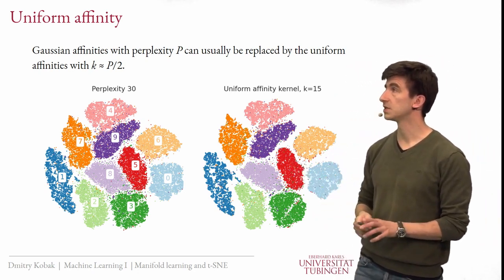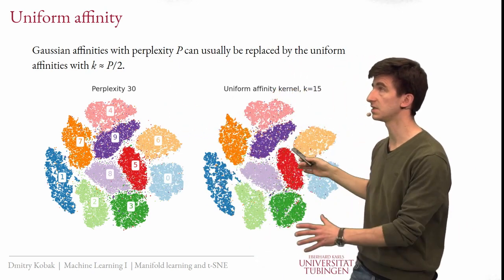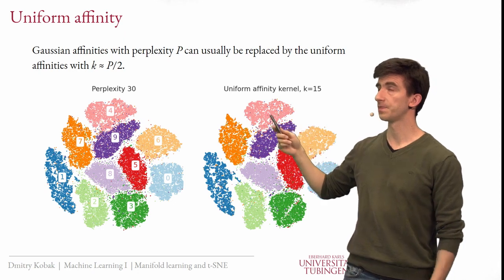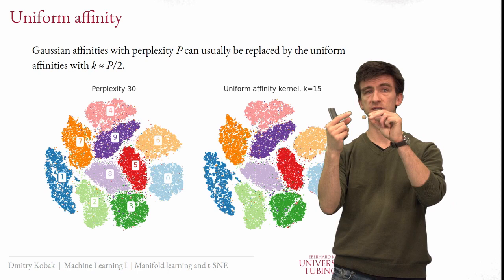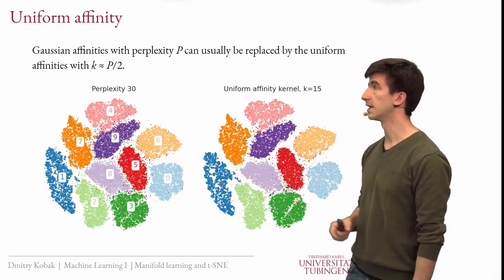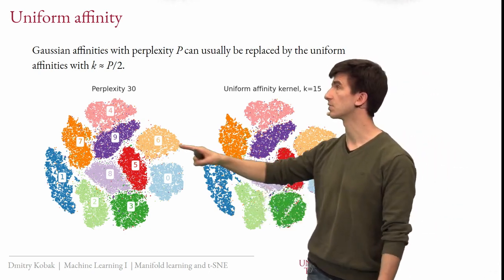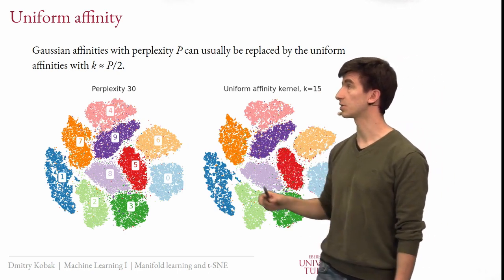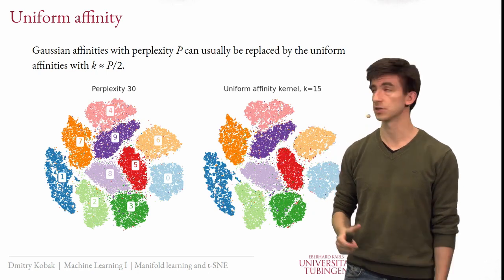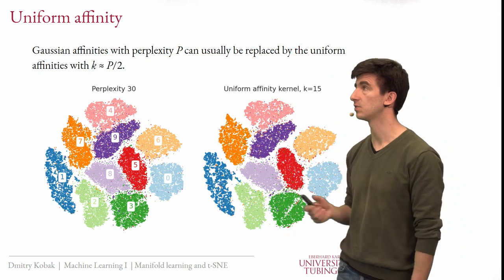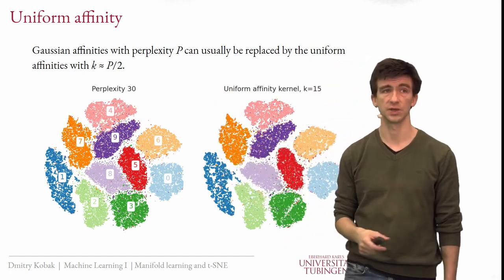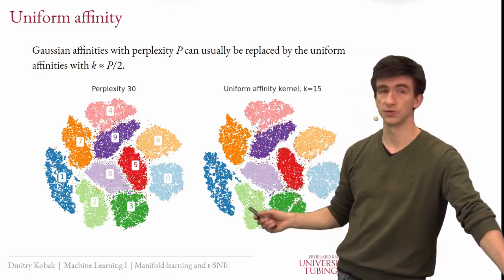Here is the default T-SNE with perplexity 30, and here is a T-SNE made with uniform affinity in high dimensional space with 15 neighbors — each point finds 15 nearest neighbors all with the same affinity value of 1/15. You have to look very closely to spot any difference, and it is not the same picture — for example this yellow cluster looks a little bit different — but it is very similar. Similarly, perplexity 300 and uniform similarities with K=150 look very similar. So the entire Gaussian affinity construction in high dimensional space is actually not important; you can just take uniform affinities with 15 nearest neighbors and the rest works the same way.